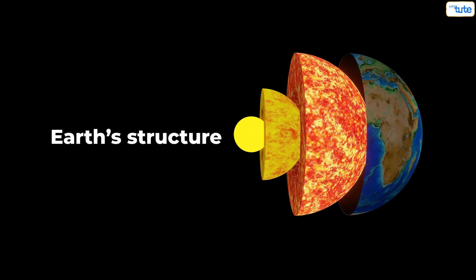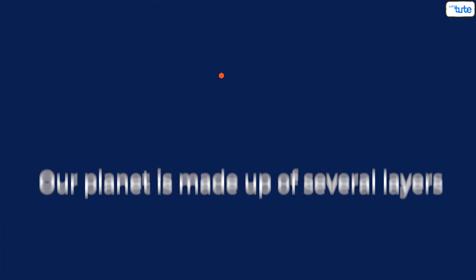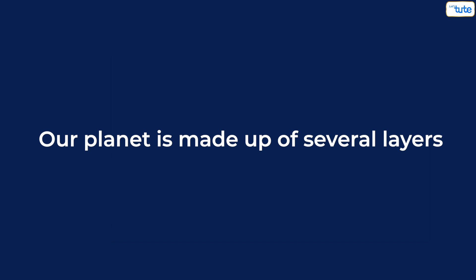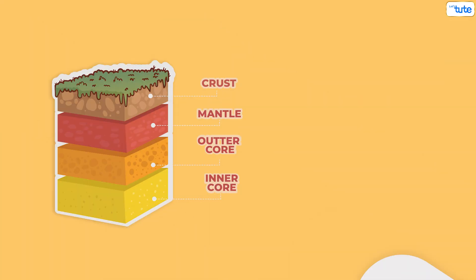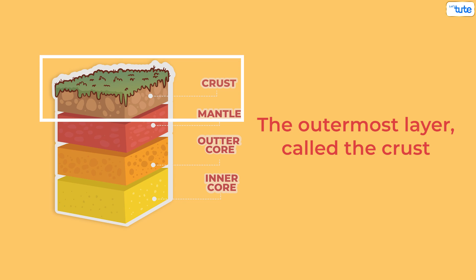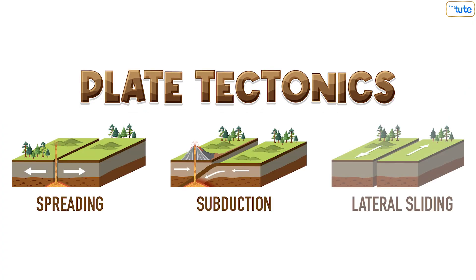First, let's dive into the earth's structure. Our planet is made up of several layers: the crust, the mantle, and the core. The outermost layer, called the crust, is broken into huge pieces known as tectonic plates.